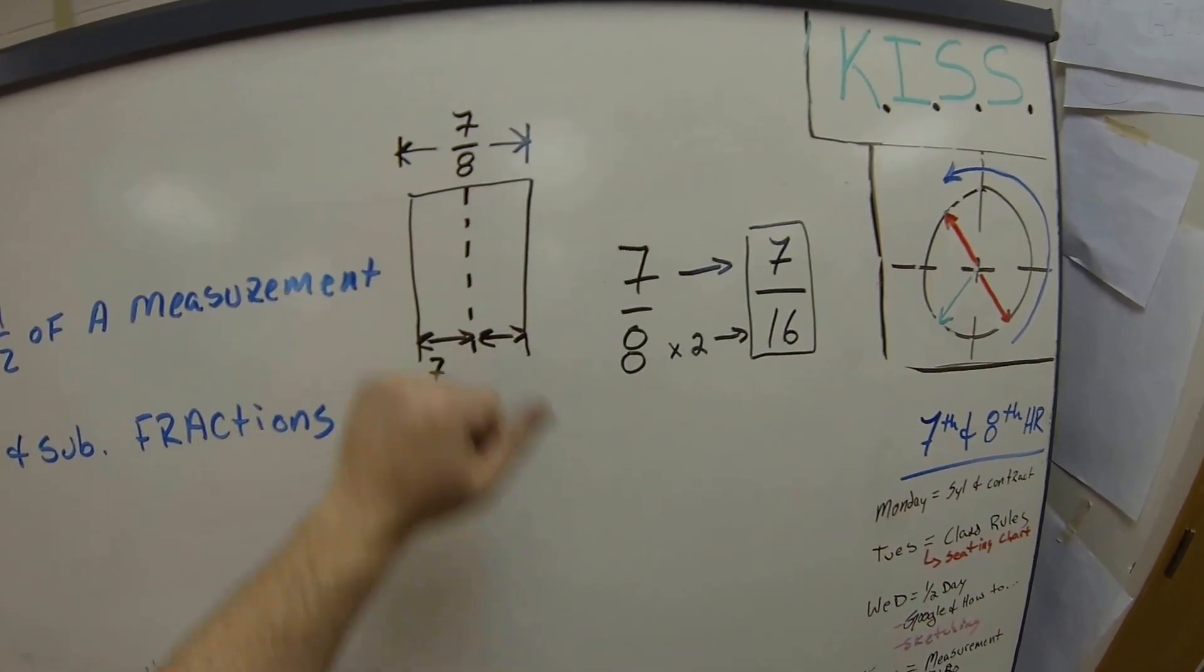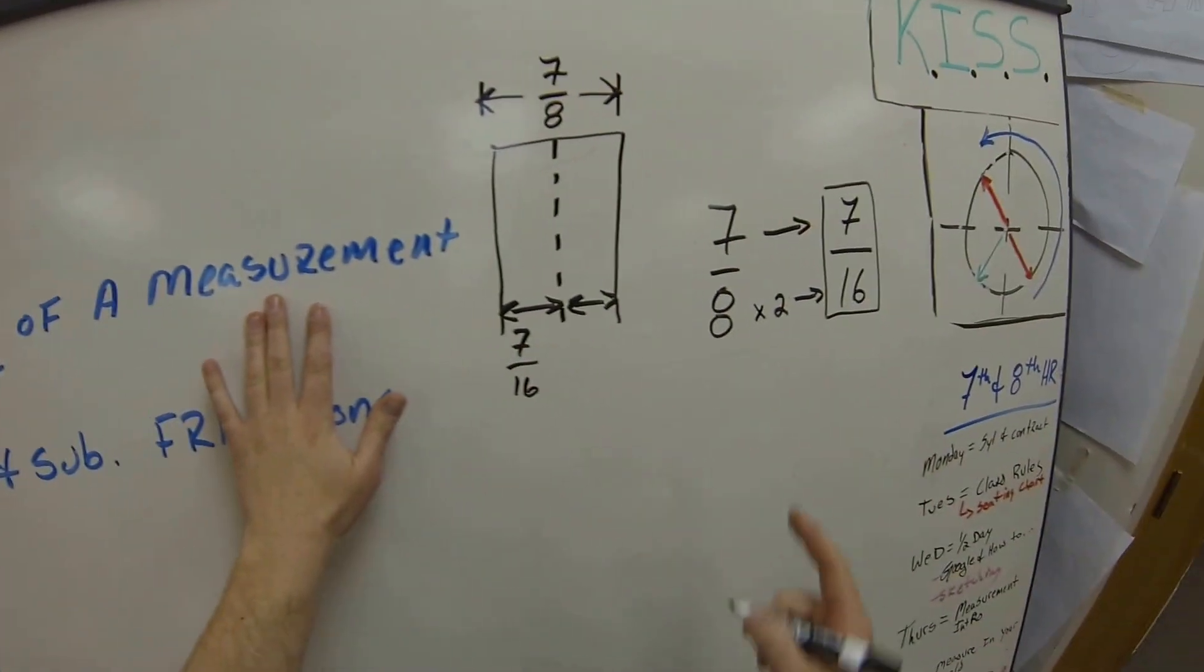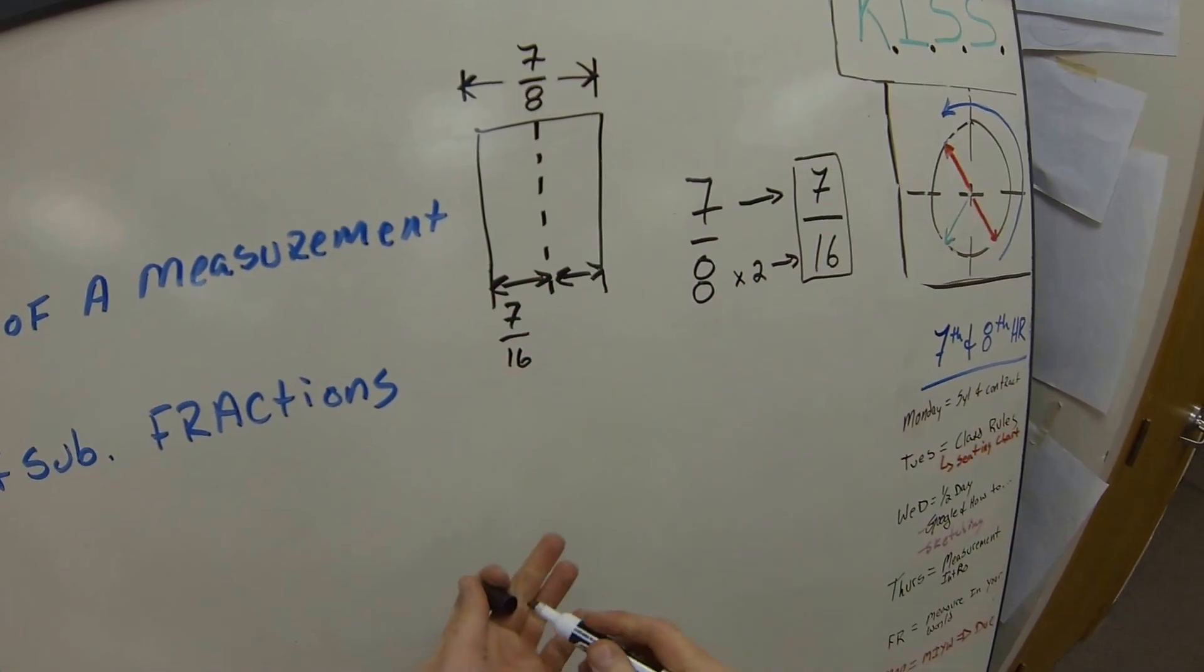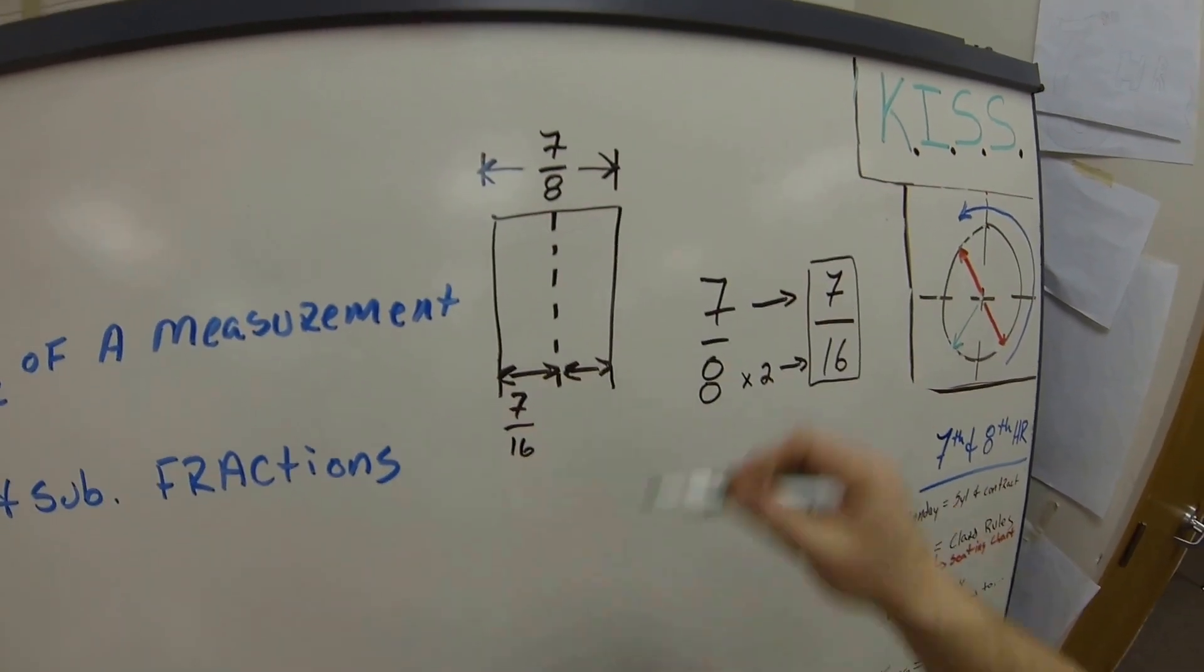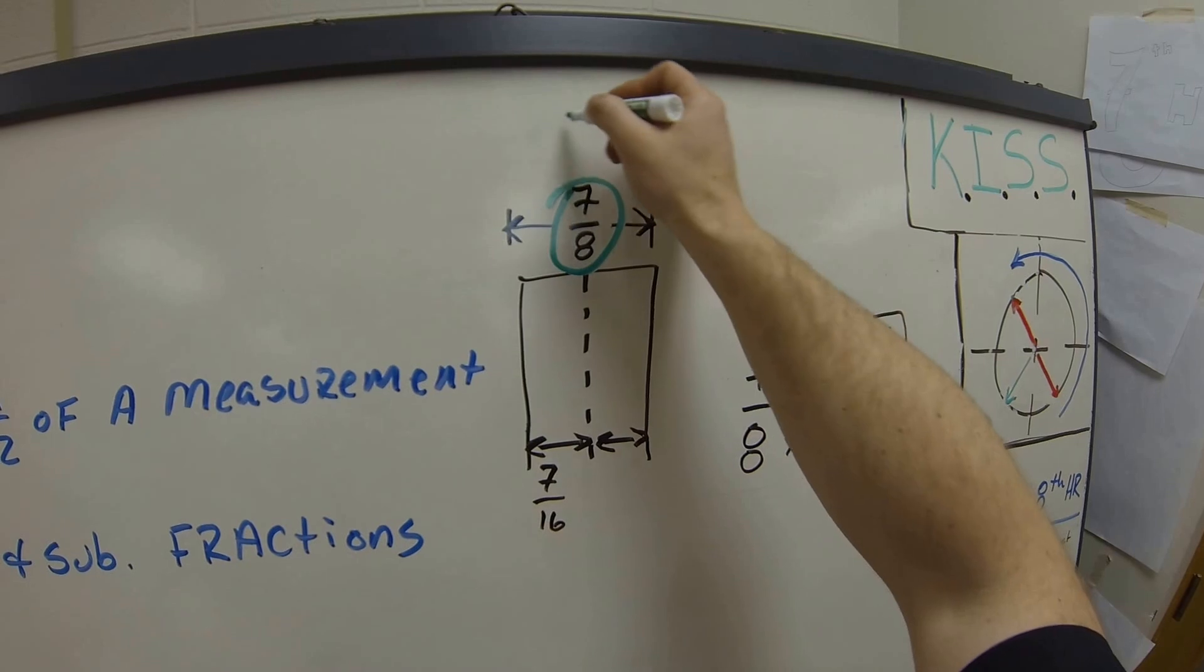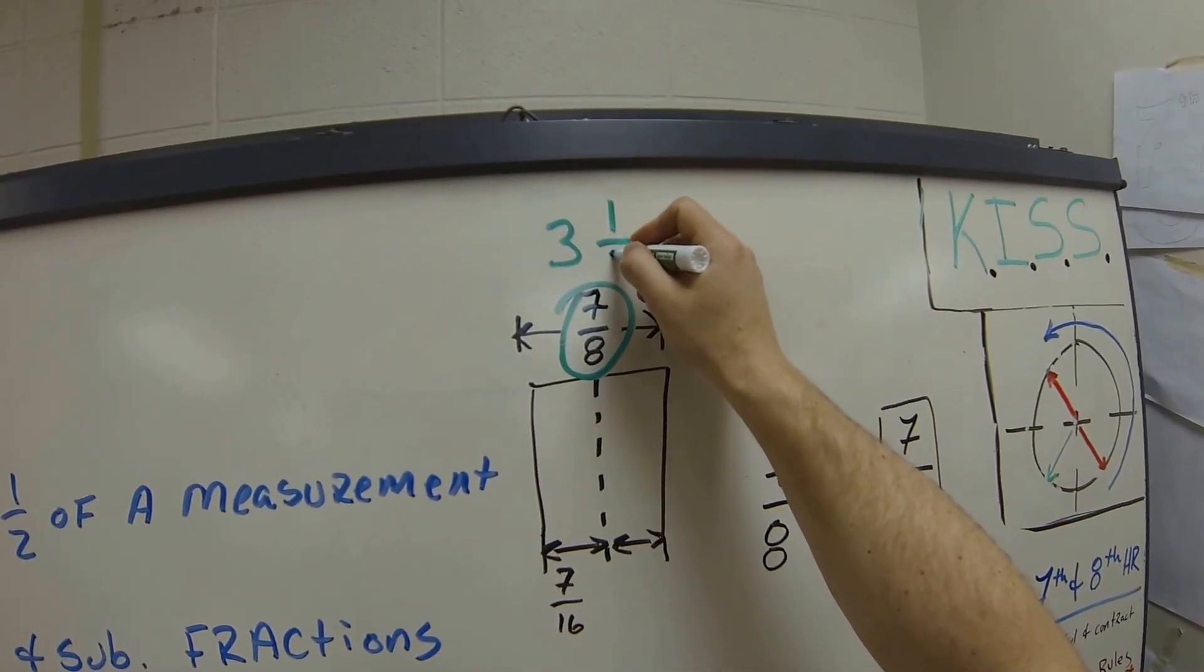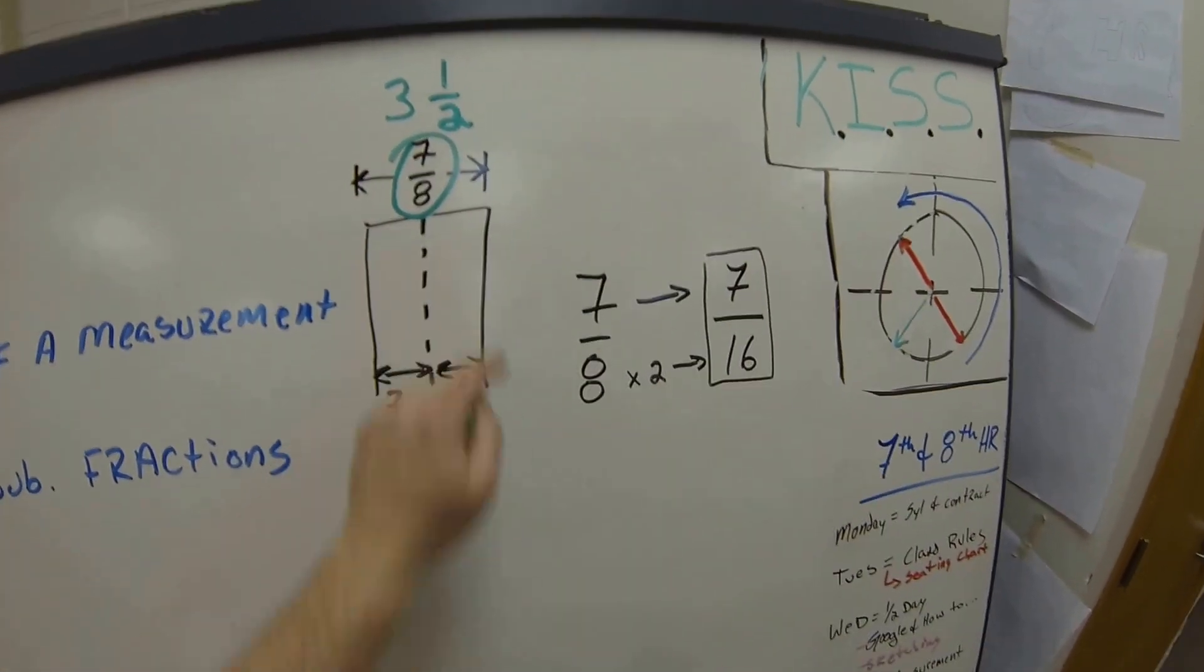If I have a bigger quantity than just a fraction, I want to find half of the measurement. Let me grab a different color marker here. Let's change this number to 3½. So this is now 3½.